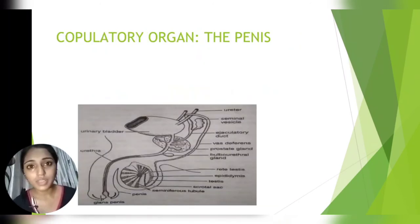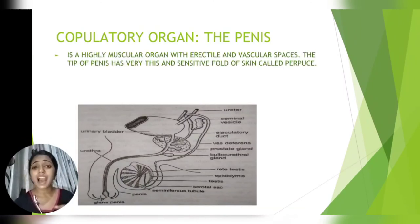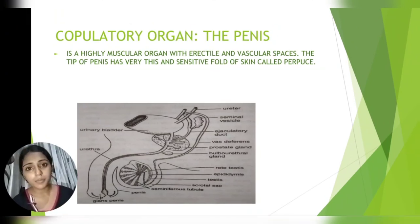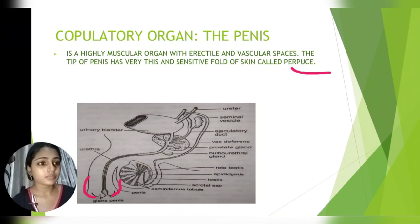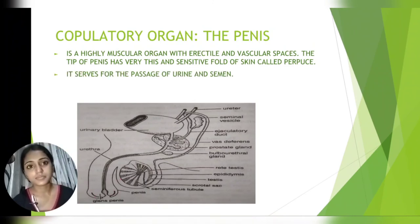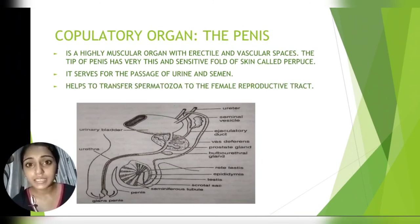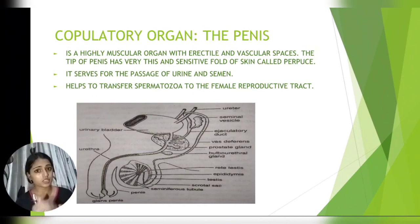Now let us see the copulatory organ, that is, the penis. It is highly muscular with erectile and vascular spaces. The tip of the penis has very thin and sensitive skin called the prepuce. It serves as the passage for urine and semen, and helps to transfer spermatozoa from the male reproductive system to the female reproductive tract, that is, the vagina.